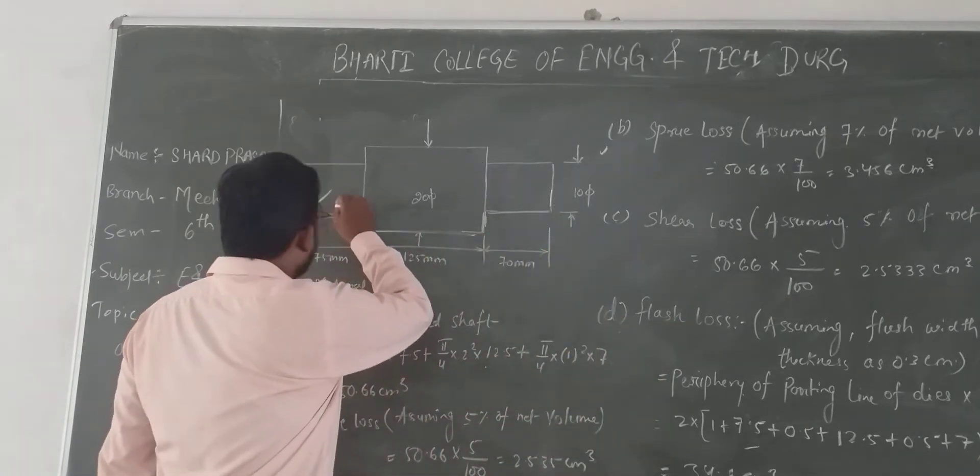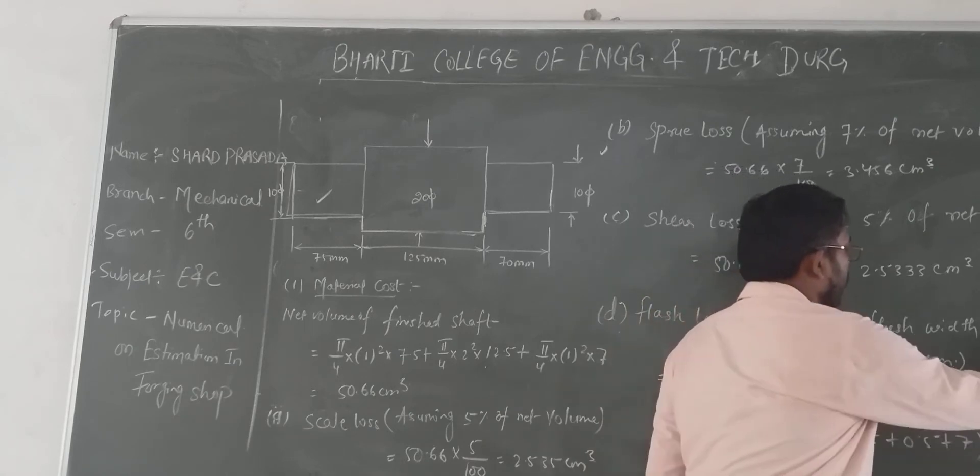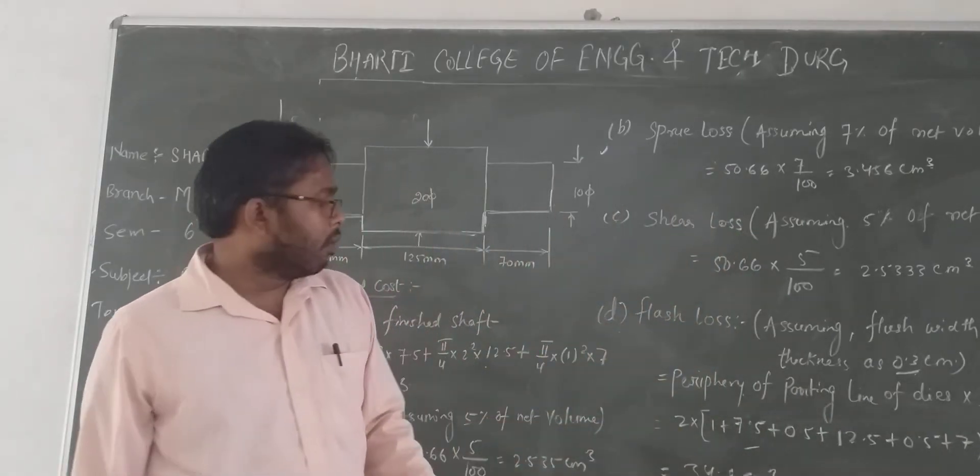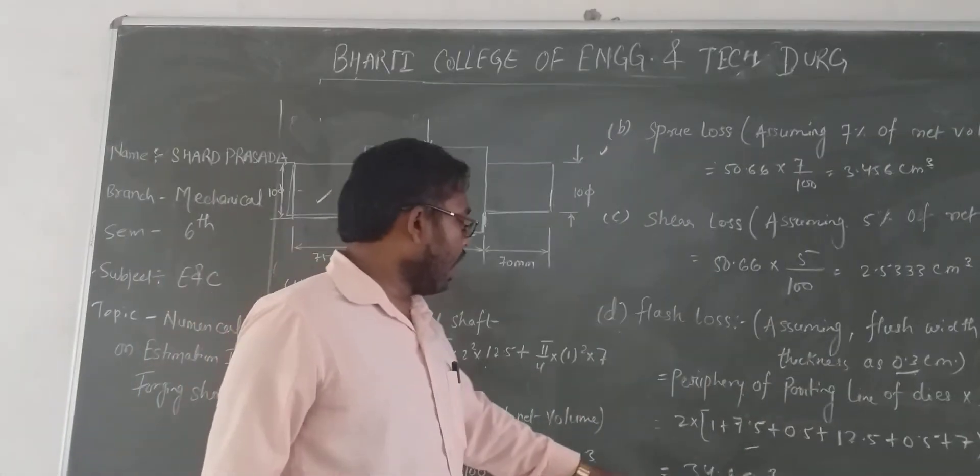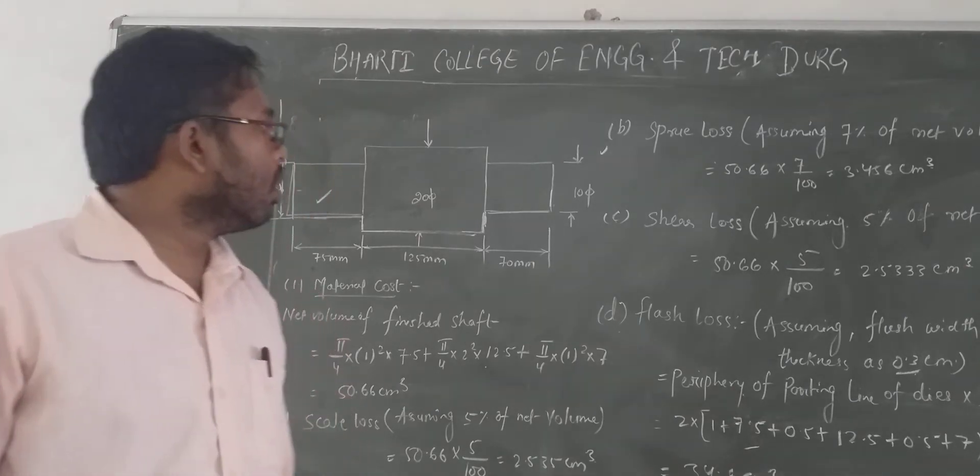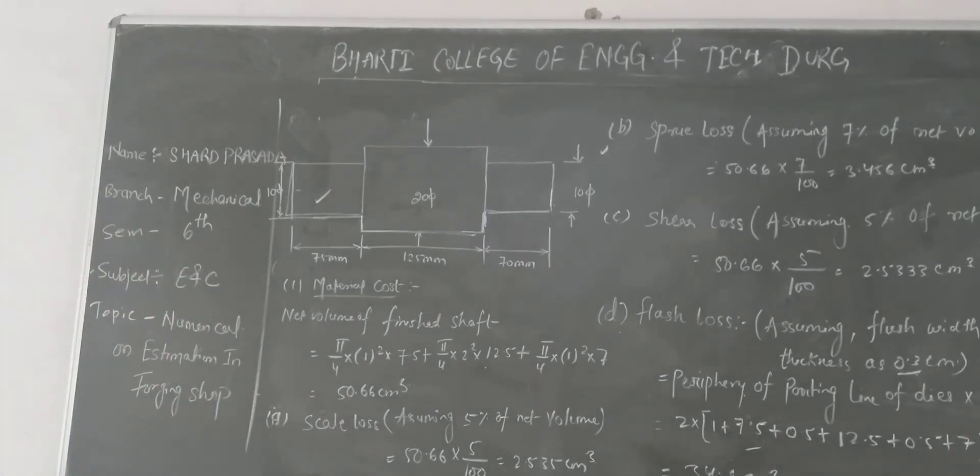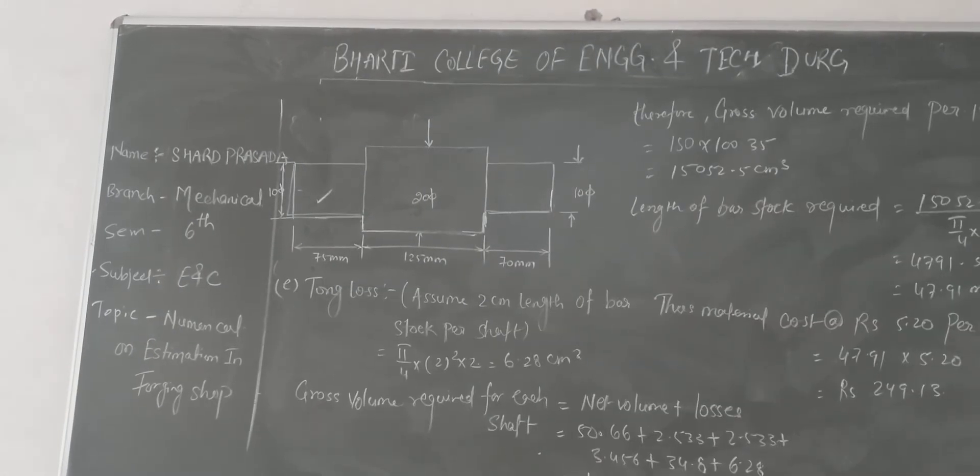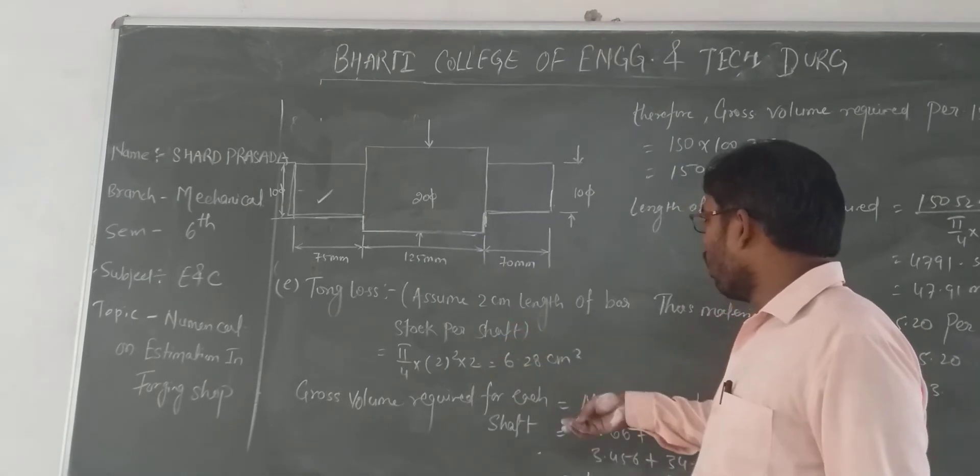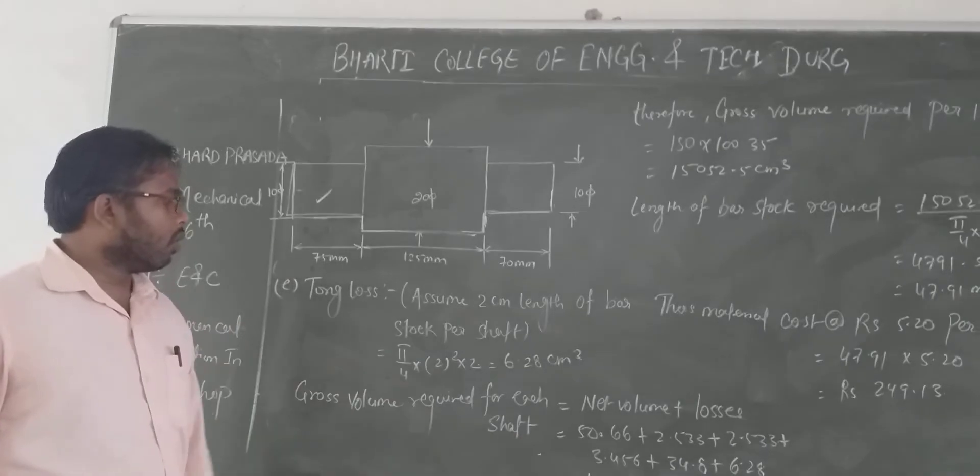Now what is the periphery? Half the perimeter times 2. It's 2 × 0.3 multiplied by the periphery. The periphery is the outer part. This gives 34.8. This accounts for scale loss, screw loss, shear loss, and flash loss, totaling 76.66 cm³.